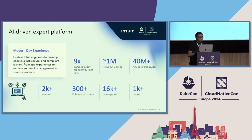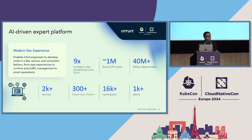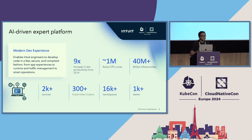This is the scale at which we operate: more than 300 plus Kubernetes clusters, 16,000 plus namespaces, more than 2,000 microservices. It's like a factory of microservices. More than thousands of teams with 10,000 developers are using our platforms, and we are on the journey of building a modern SaaS platform with a lot of abstraction to ease the life of developers.